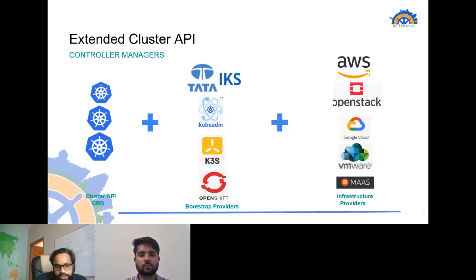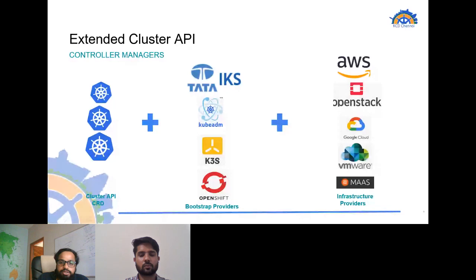This has been extended now with multiple bootstrap providers. Using the same Cluster API with extended versions and the same principles, we would be able to spin up a K3s cluster onto any cloud provider, or spin up OpenShift clusters, or Tata IKS - Tata's version of Kubernetes service - which is used in our widespread deployments. On the infrastructure part, we have validated extensively with MAAS, as we have our points of presence across India in more than 28 locations, accounting for around 150 to 200 servers managed by MAAS.